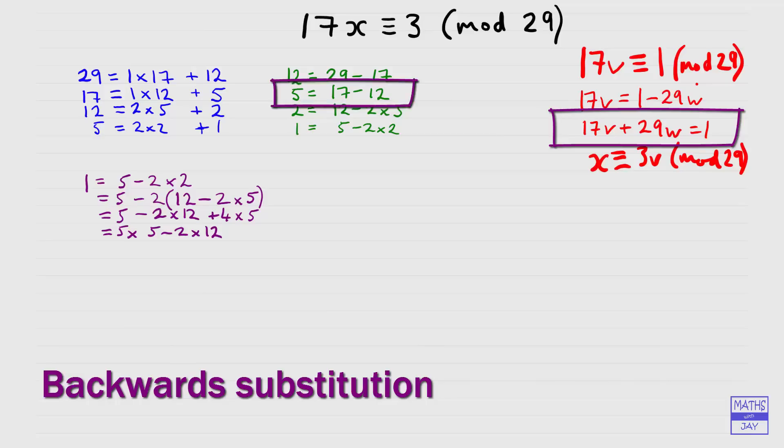Looking back up at our next line in our backwards substitution, we're now looking at 5 being equal to 17 minus 12. So we'll replace the second 5 by that. So instead of that 5, we've got 17 minus 12. And we've still got minus 2 times 12. Now we'll multiply out the brackets. So we've got 5 times 17 minus 5 times 12, and still minus 2 times 12. And then when we simplify, we'll still have 5 times 17. And we can combine minus 5 times 12 and minus 2 times 12 to give us minus 7 times 12.